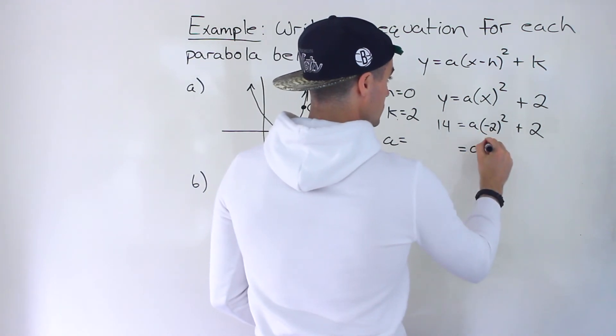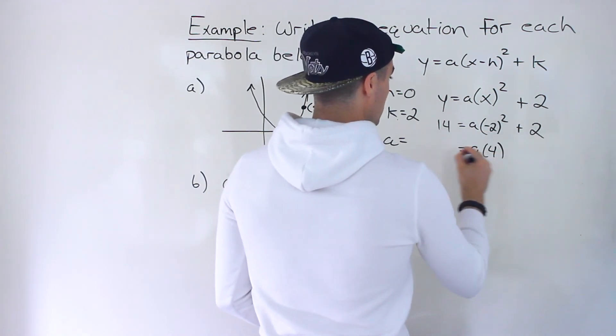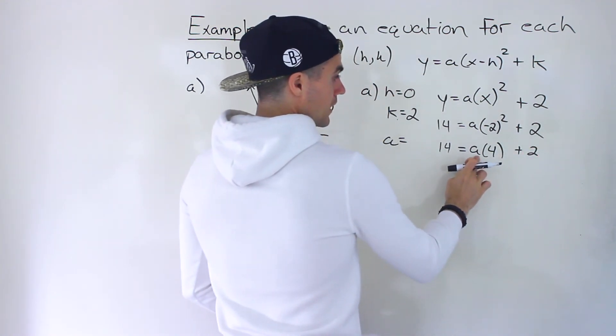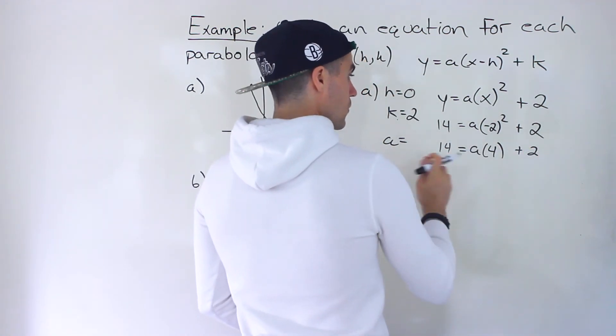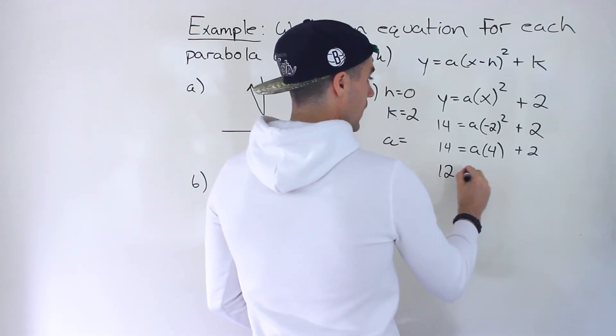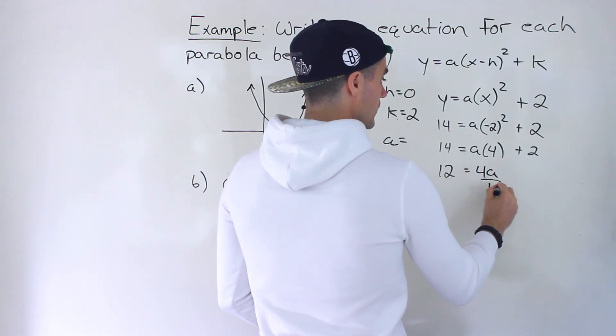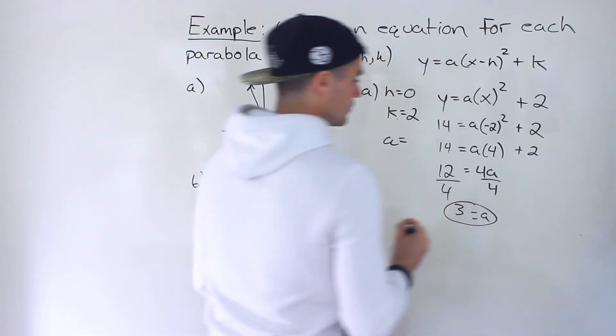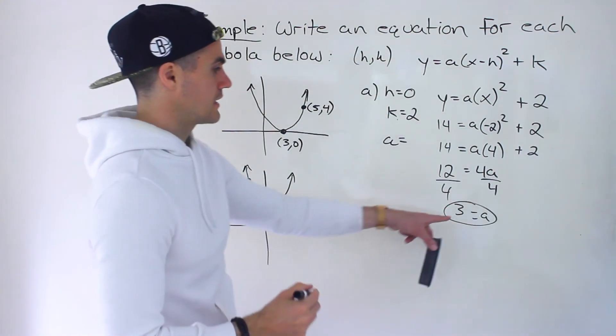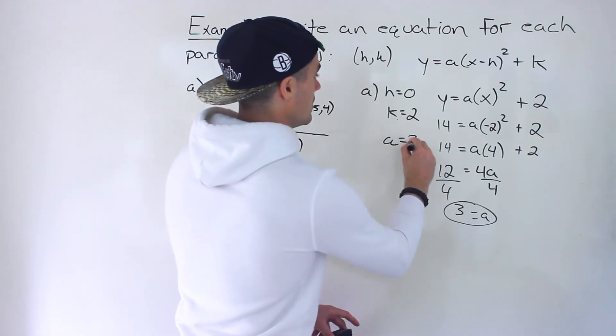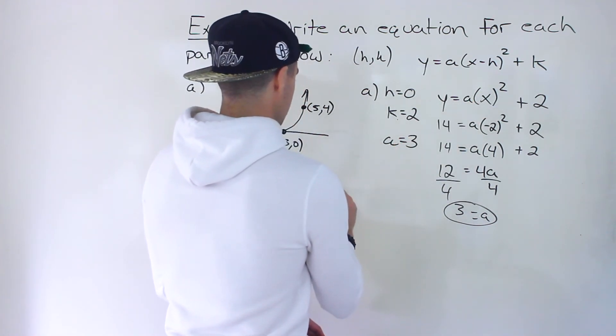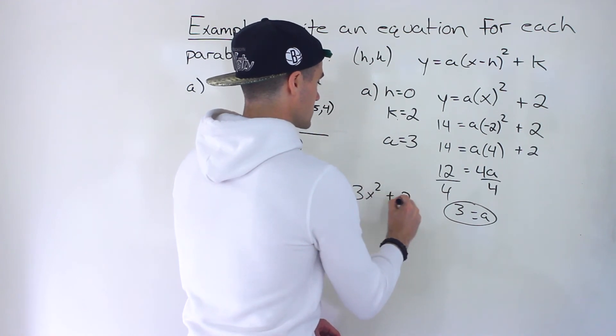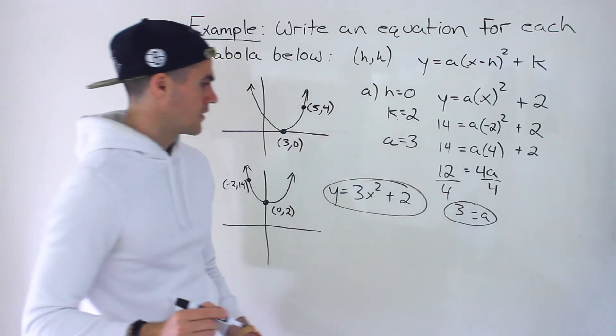So from here, we'll have negative 2 to the power of 2 gives us 4. And we've got plus 2. Now, from here, we've got to isolate for this A. So let's bring the 2 over. 14 minus 2 gives us 12. And we've got 4A, divide by 4. So we just take that A value of 3, plug it in here. And so the equation ends up being Y equals 3X squared, plus 2.